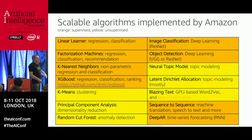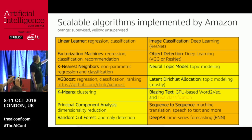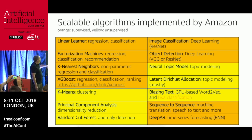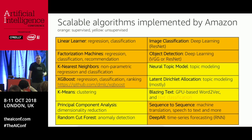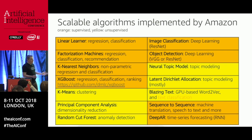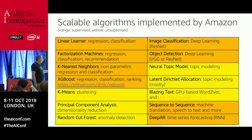We have the usual things: linear learner for regression and classification — binary and multi-class — factorization machines as a generalization of that, K-NN, and XGBoost. XGBoost is a bit different — it's the only one not implemented by Amazon; it's the open-source GitHub implementation. Then on the unsupervised side: k-means, PCA, and random cut forest for anomaly detection.